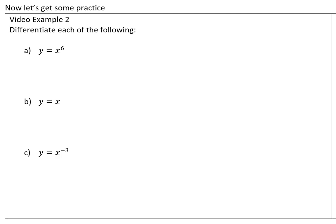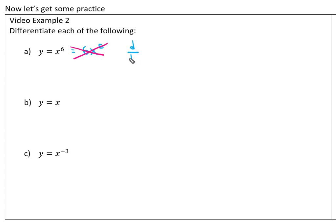Let's get some practice. For d/dx of x to the 6th — if you wrote that it's equal to 6x to the 5th, that notation is not correct. You can't say the original function is equal to its derivative. The correct way to write this is: d/dx of x^6 equals 6x^5, or y prime equals 6x^5. Make sure you don't put equal signs between statements that are not actually equal to each other.